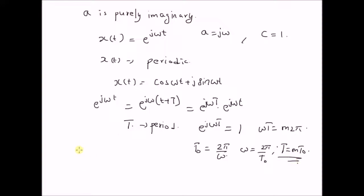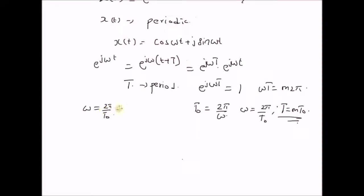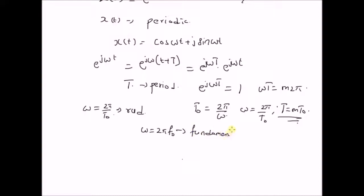Thus, the fundamental frequency omega equals 2π divided by T₀, measured in radians. Sometimes omega is also written as 2π times f₀, where f₀ is the fundamental frequency in cycles per second. This is the fundamental frequency.